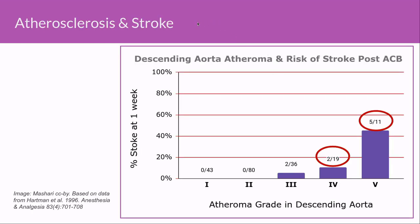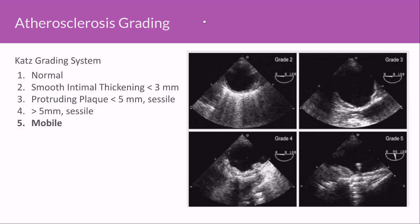This is some fairly old but classic data looking at perioperative stroke after CABG, classified by atheroma grade in the descending aorta. Patients with grade 5 atheroma had a nearly 50% risk of stroke at one week. Grade 4 had nearly 10%, with a substantial drop-off below that. Grade 1 is normal — nearly impossible to find in adults. Most adults have at least some intimal thickening making them grade 2. Protruding plaques under 5mm are grade 3, over 5mm is grade 4, and any mobile segments make it grade 5, the highest risk category.